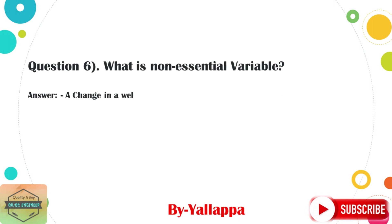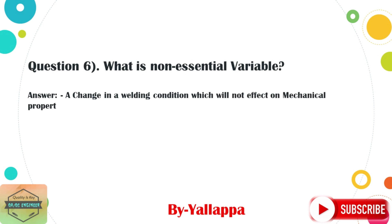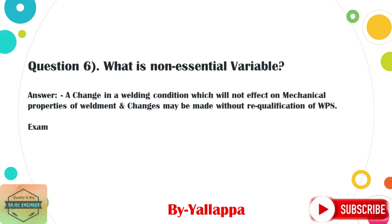Question 6: What is a non-essential variable? Answer: A change in a welding condition which will not affect the mechanical properties of the weldment, and changes may be made without re-qualification of the WPS. Examples: groove design, root gap, electrode diameter.